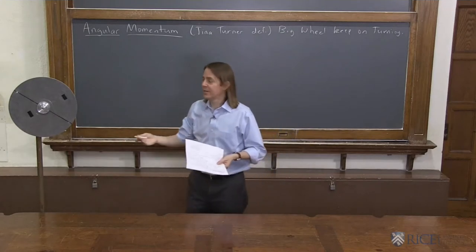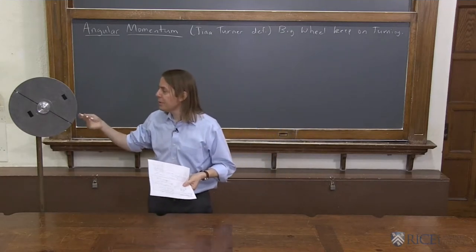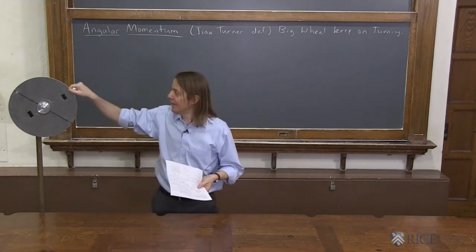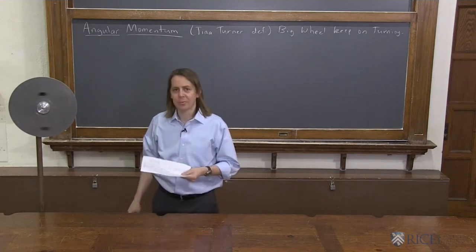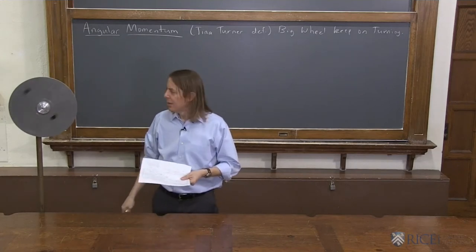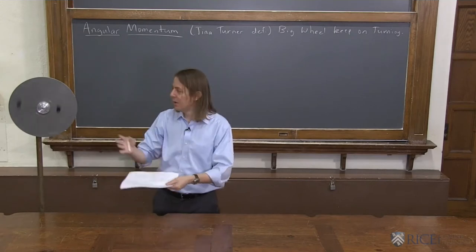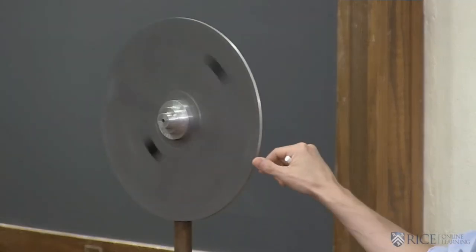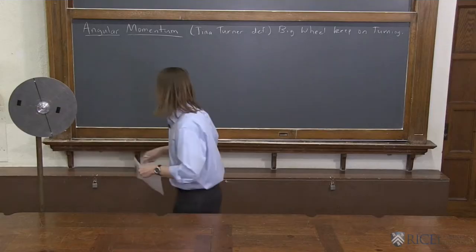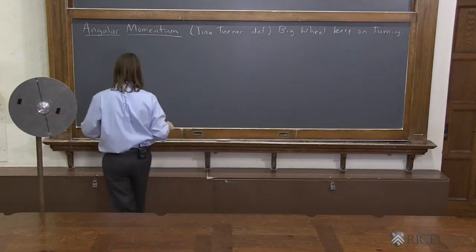Basically, if we spin a big object like this aluminum wheel that we use on rotational motion, it doesn't stop spinning. It keeps turning. Because just like we have translational momentum, things that are in motion tend to stay in motion. When something is rotating, it tends to keep rotating. So let's look at this mathematically a little bit.